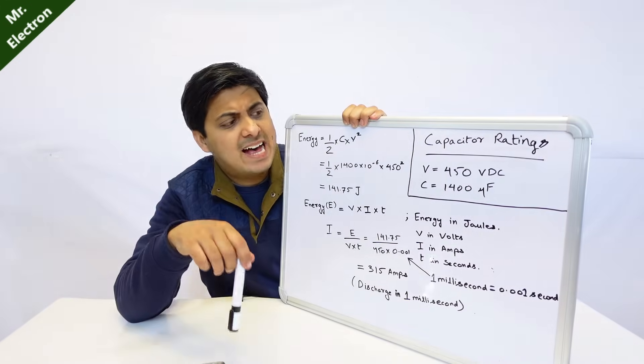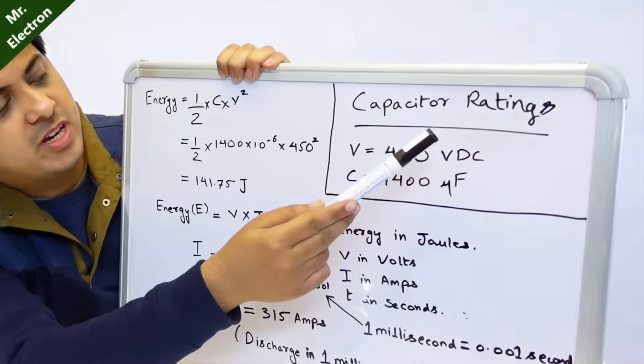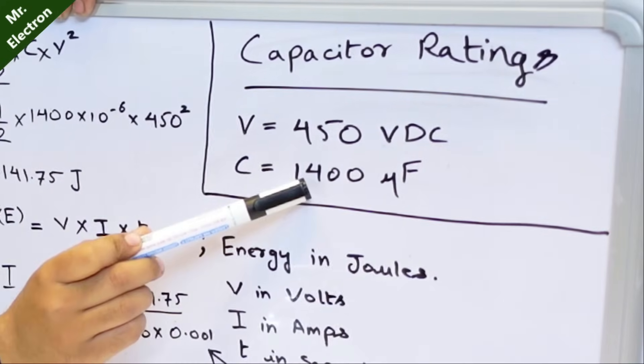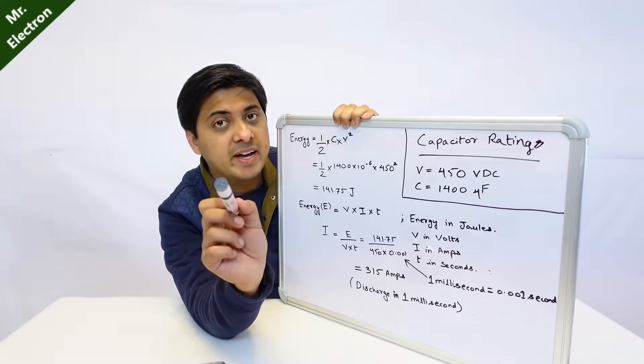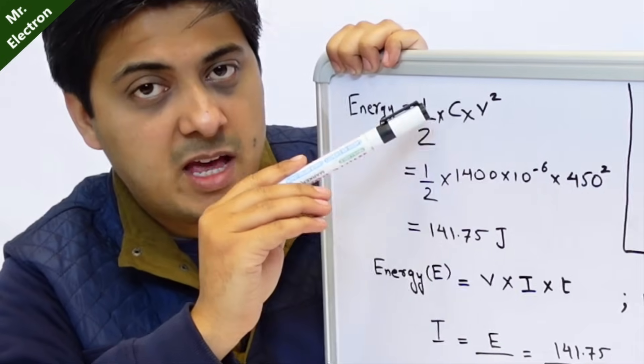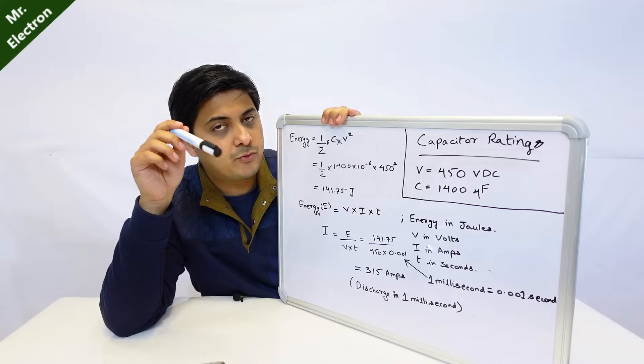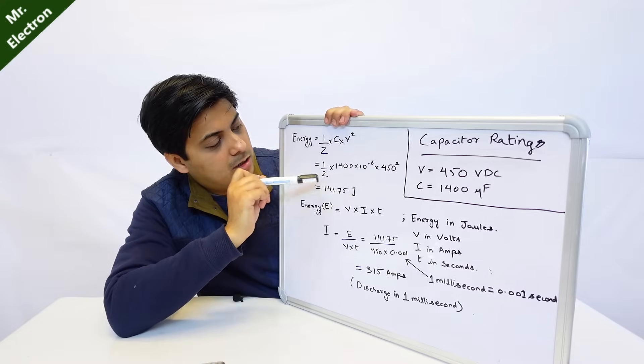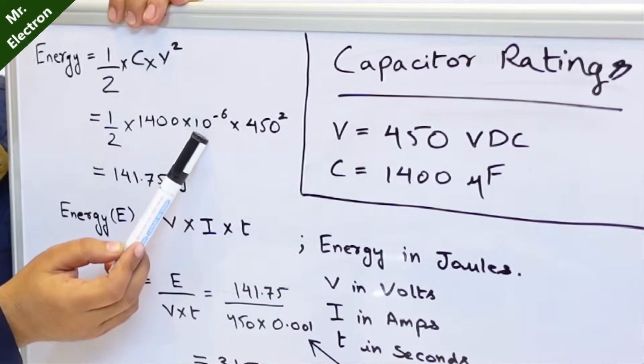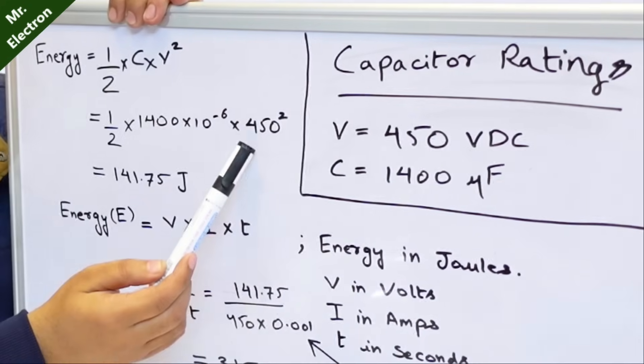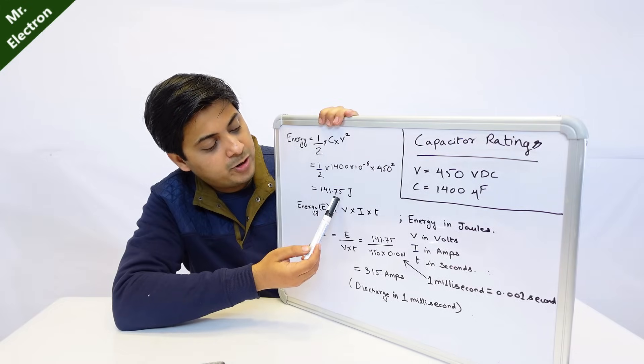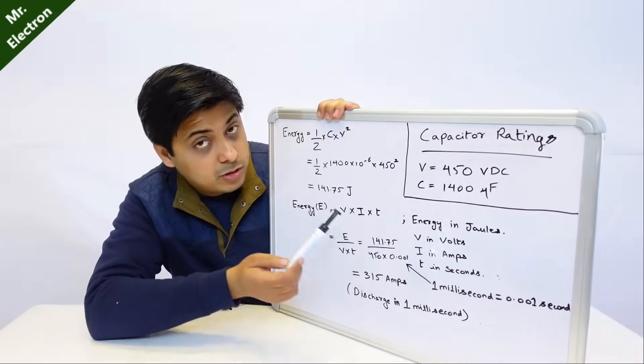Because of that very reason it was huge, the current multiplied with the help of added up time. I will show you now guys. The calculation is as follows: the capacitor rating as you can see here, voltage is equal to 450 volts DC, capacitance is 1400 microfarad. Micro stands for 10 to the power of minus 6. Energy is denoted by half CV square where C is the capacitance of the capacitor and V is voltage at which the capacitor is charged at.